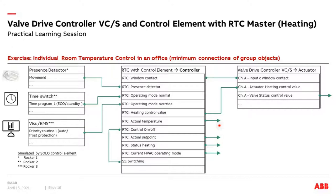Additionally we have status objects: actual temperature sent on KNX to display on a panel, actual set point, status of heating, and current HVAC operating mode — comfort is value 1, standby is 2, echo is 3, and frost is 4. Also the status of the valve output. These are the minimum objects needed for our exercise.